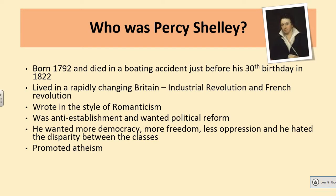Percy Shelley was born in 1792 and died in a boating accident just before his 30th birthday in 1822, in Italy, where he was away with his wife Mary Shelley — the writer of Frankenstein. He lived in a rapidly changing Britain, just on the cusp of the Industrial Revolution, when people were moving from the countryside into large urban areas — cities such as Manchester, Birmingham, Bolton, London, Leeds, and Liverpool — for work. Jobs in agriculture were becoming much harder, and it was much harder to earn money farming.